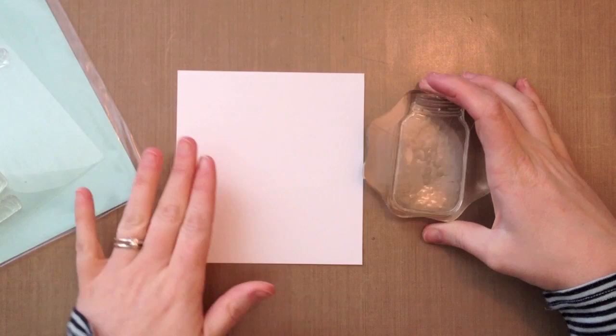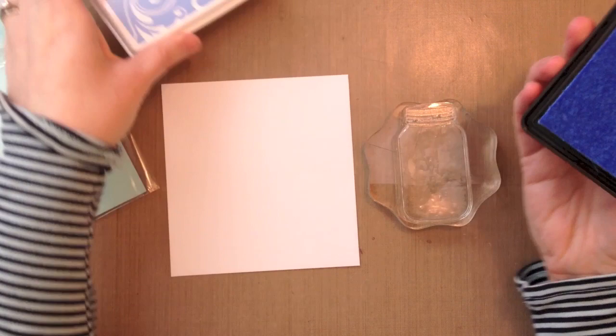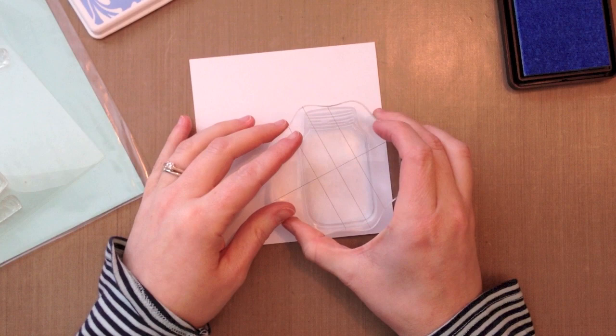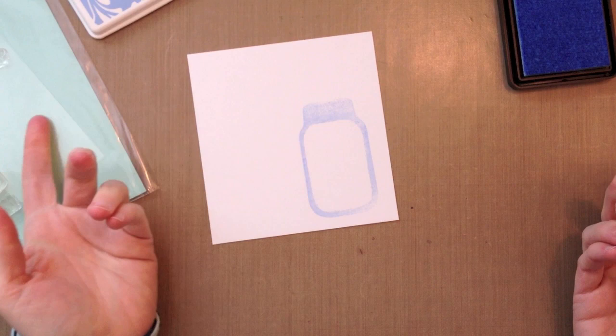So I'm going to ink it up with the new Soft Sky ink from Hero Arts. It's just going to be getting on the edges and you'll see what I'm talking about when I stamp it here. So I'm going to stamp it down and you'll see it kind of has this ghosting edge effect.